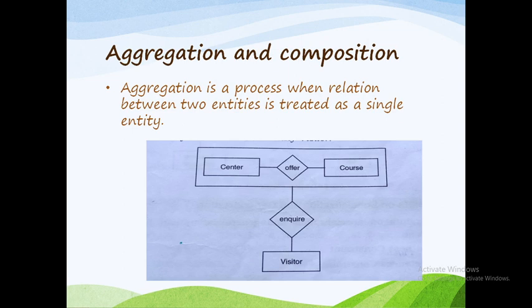Here we have considered an example: center and course. The relation between center and course entities is 'offered.' Course means it's a science group or an arts group. Center means college. So center and course groups combine, and a new entity is framed.